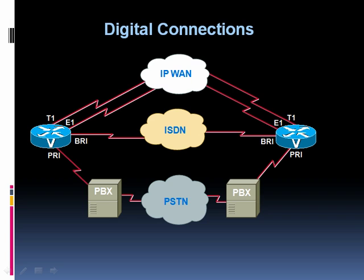There's a Layer 3 signaling protocol that ISDN uses called Q.931, and that's going to carry a ton of information — much more signaling information than just saying the phone is on hook or the phone is off hook. It can carry information such as caller ID, the number that was dialed, and if a call does not go through, it can give us information as to why.